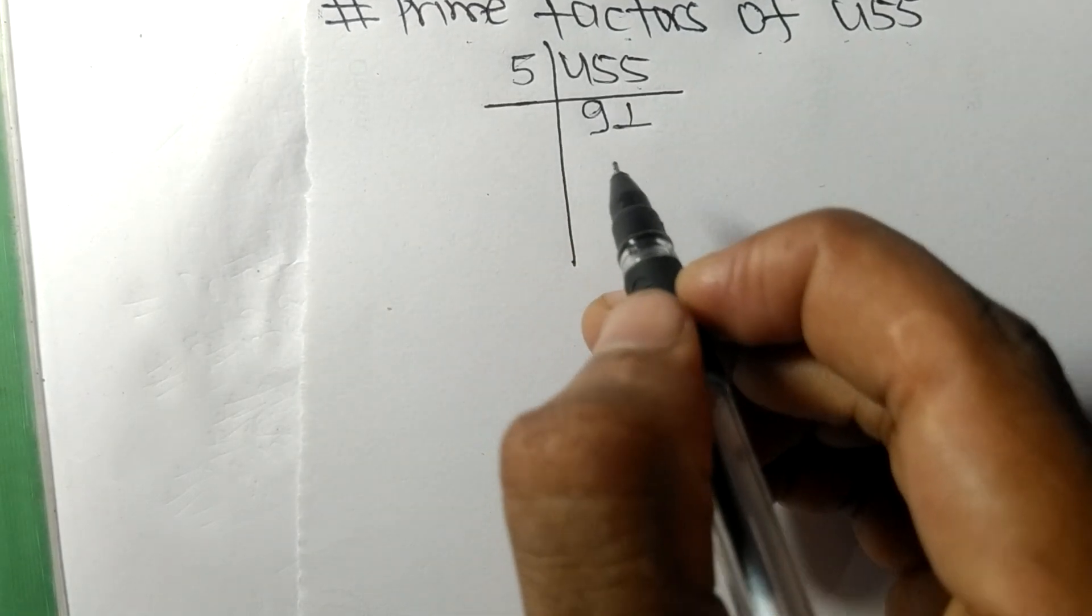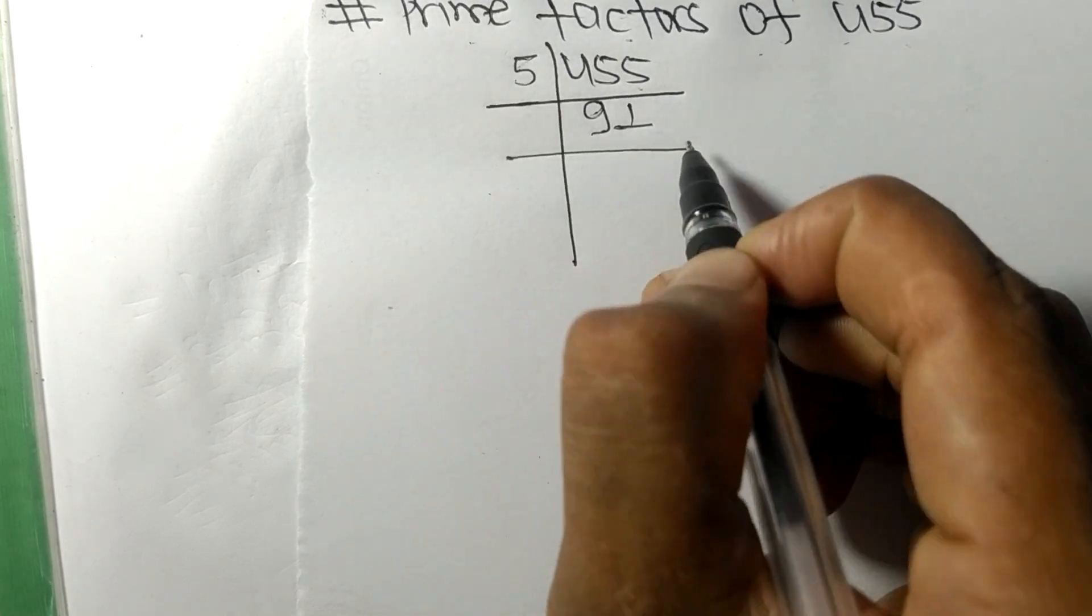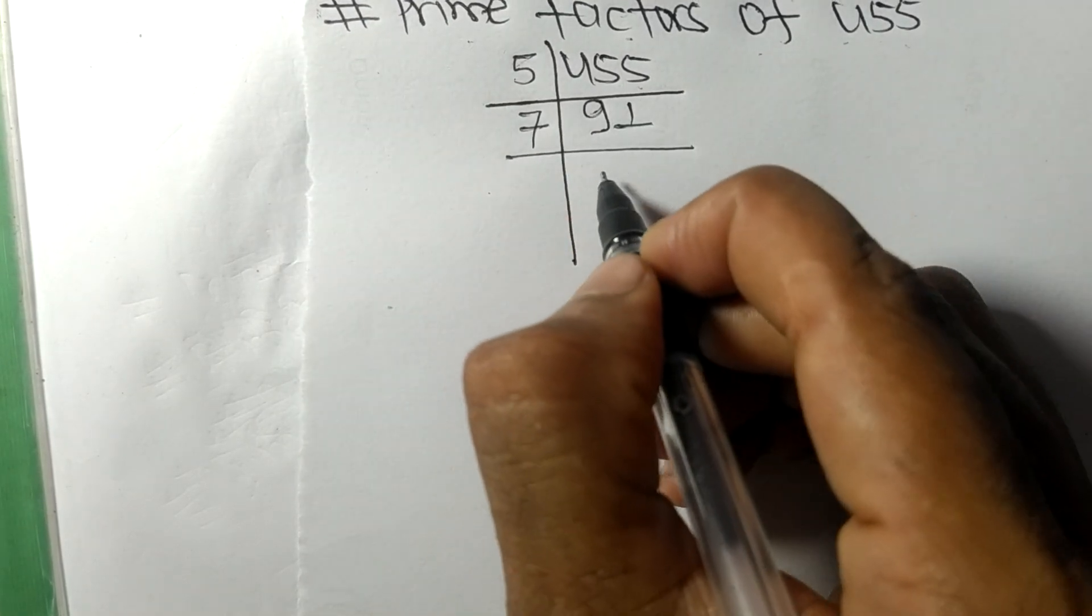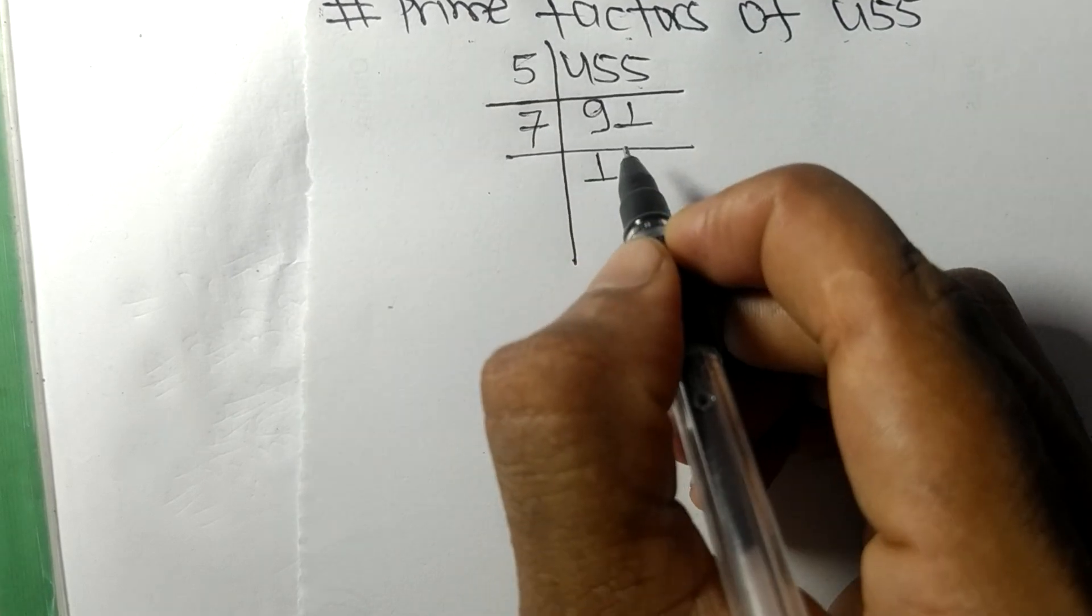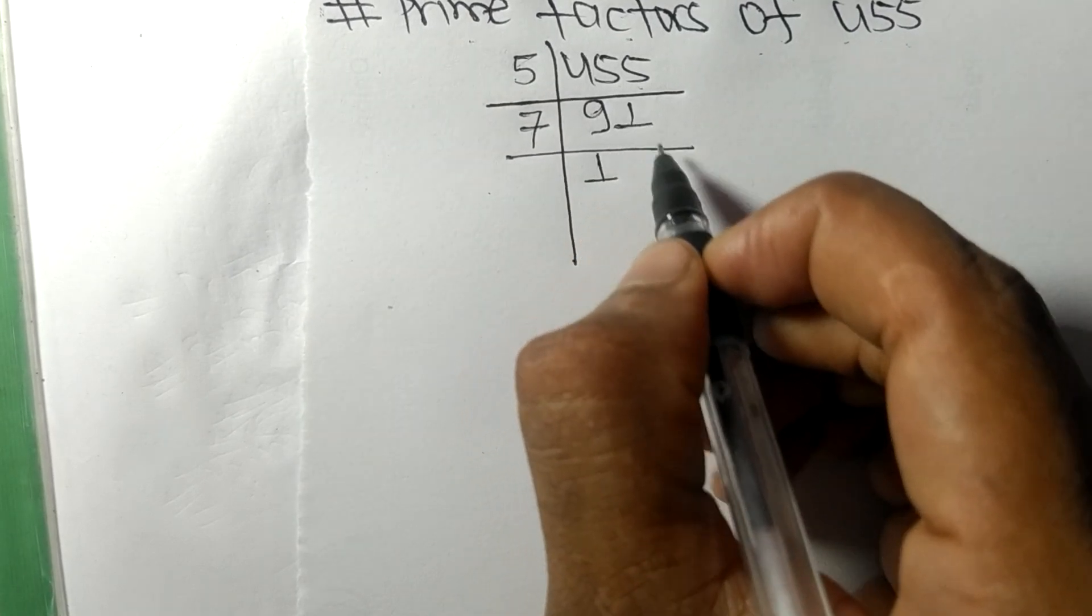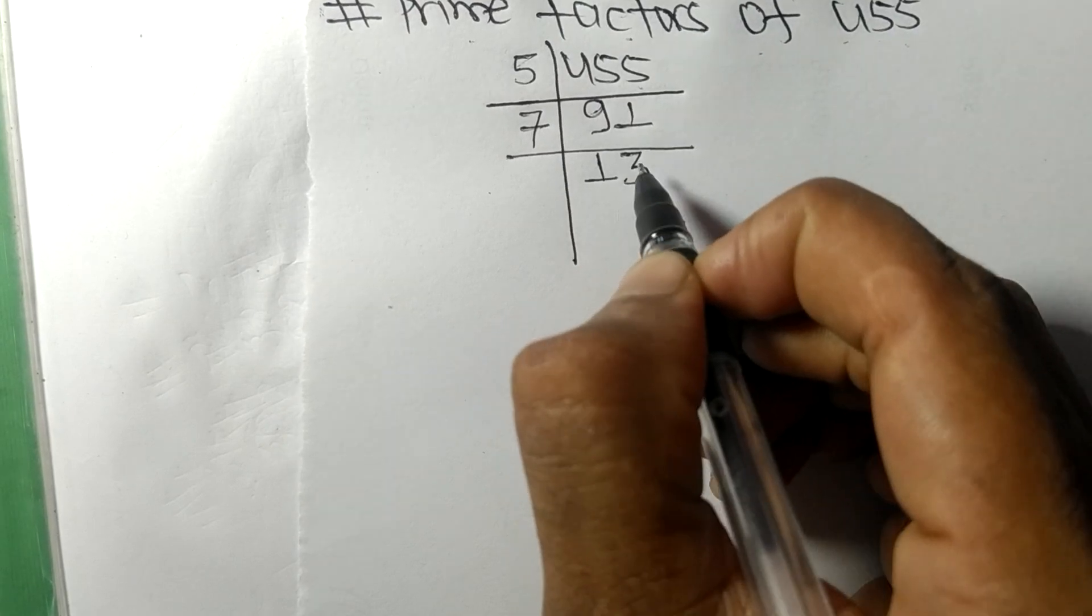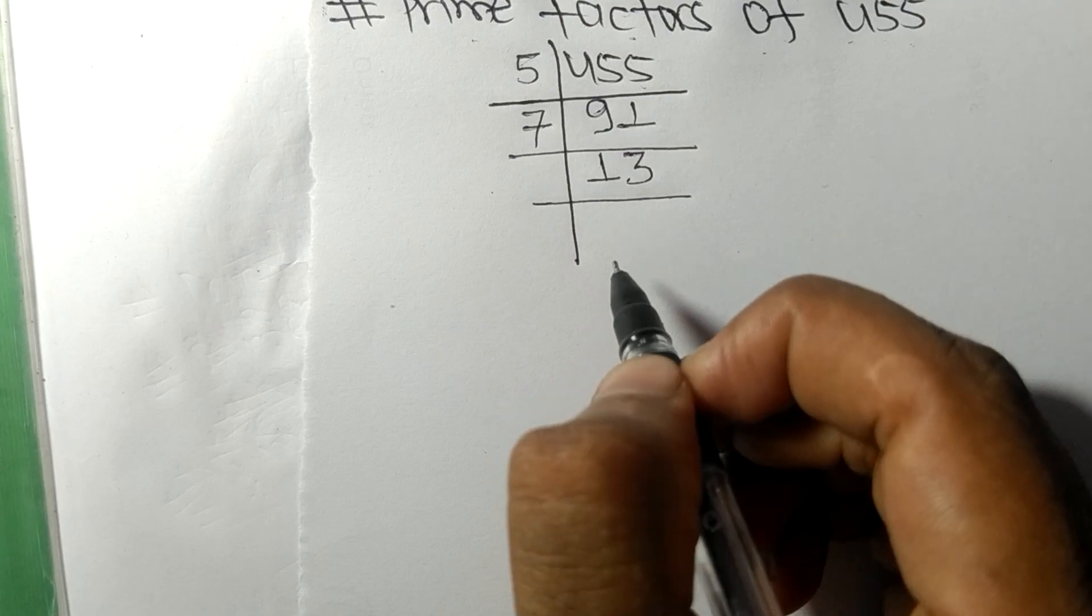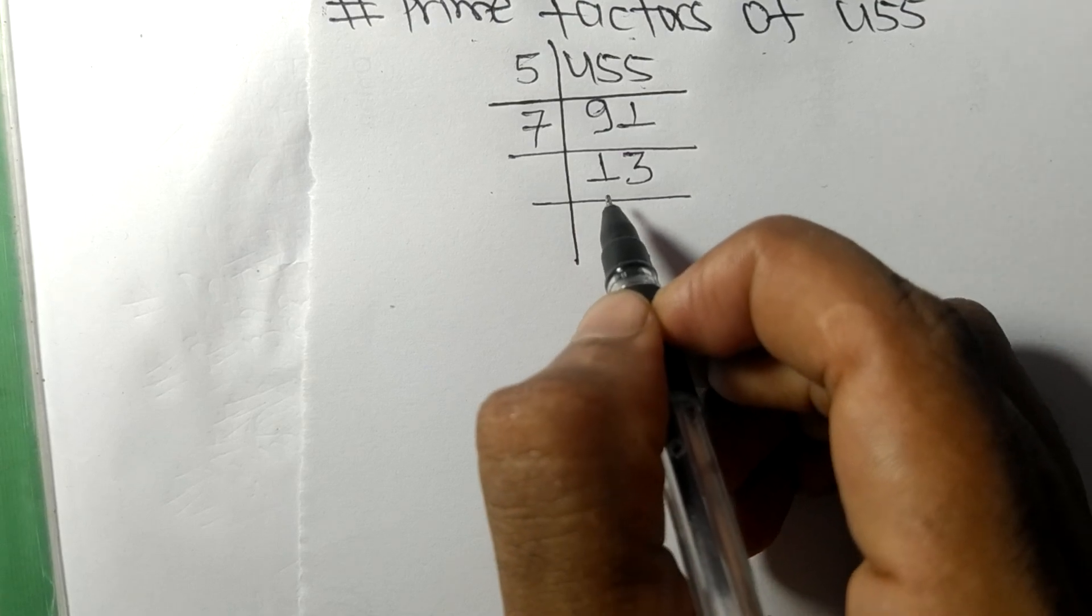Now we got here 91, which is divisible by 7. 7 times 1 means 7, remainder 2. 21, so 7 times 3 means 21. Now we got here 13, which is our prime number.